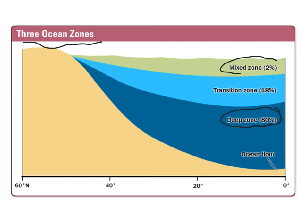At the top of the ocean, the surface area, we call that the mixed zone. This is where we have a lot of photosynthetic organisms, and it accounts for only about 2% of the ocean's volume. This is where we see the bulk of life because photosynthesis can occur here. Between the mixed zone and the deep ocean, we have the transition zone, where some photosynthetic organisms exist and there's a raining of detritus — nutrients falling down — so life can occur there as well, along with some mixing.